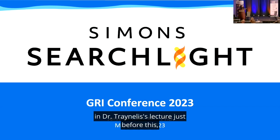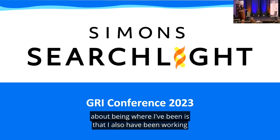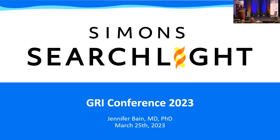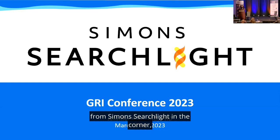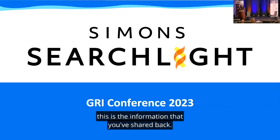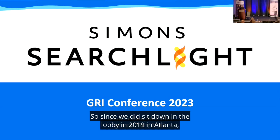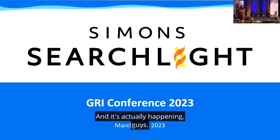For those in Dr. Traynelis' lecture just before this, he showed a picture from the 2019 group. I've had the amazing opportunity to be with this group in 2018, 2019, and now 2022 in person. I've also been working in collaboration with Simons Searchlight, and I'm going to present data from Simons Searchlight — which is actually your data. The really key thing is that harmonization has been occurring. Since we sat down in Atlanta in 2019, we've been aligning our data collection so people don't have to fill out eight million forms.